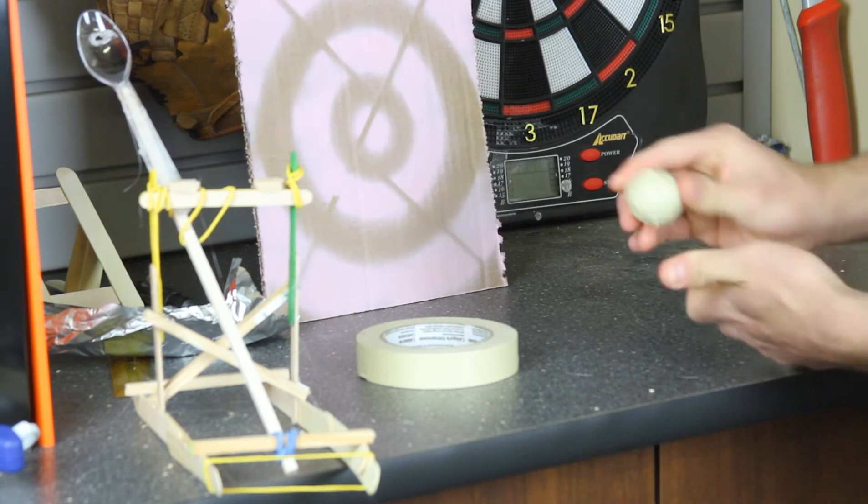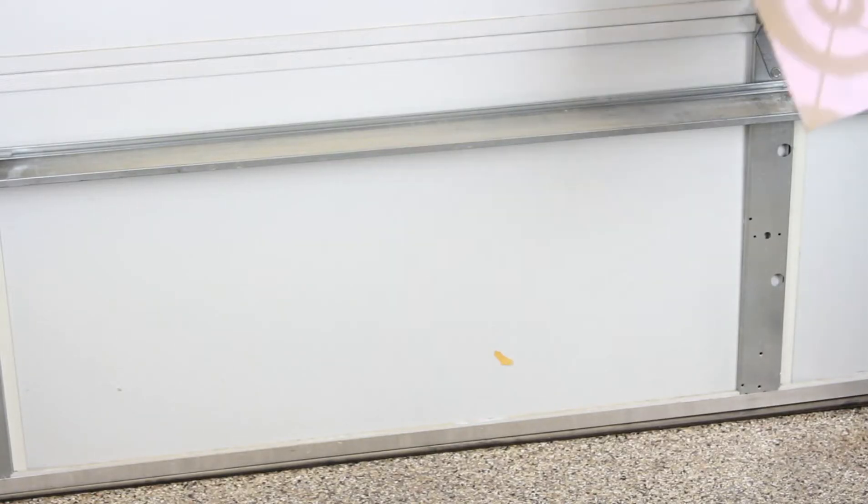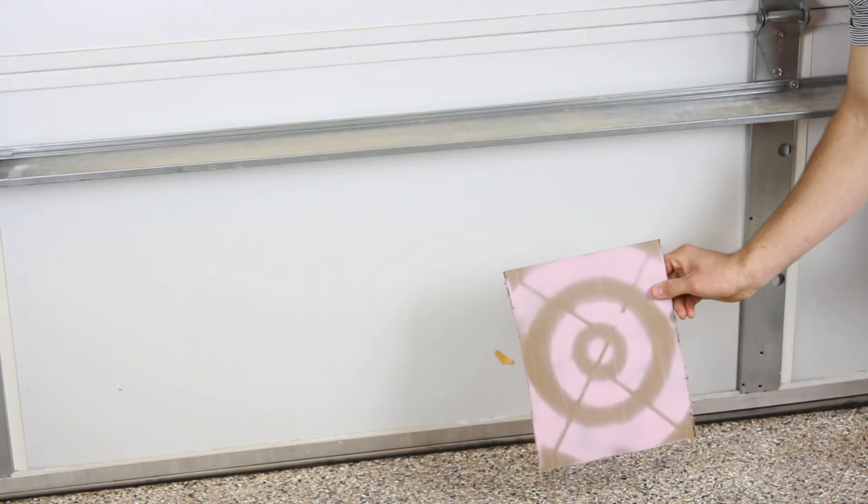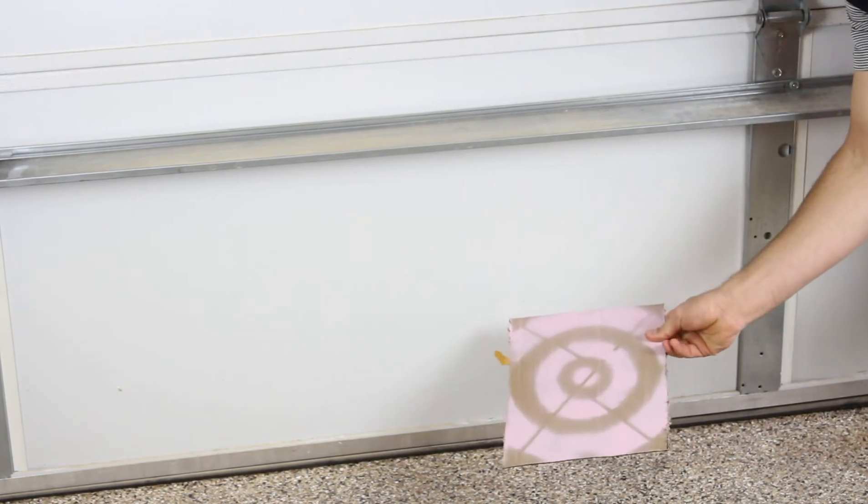The next step is to place your target, and you can pretty much do this however you like. You can lay it flat on the ground, against a wall, or leaning, which is what we ended up doing. You can also change the height of it if you think that could help your accuracy.